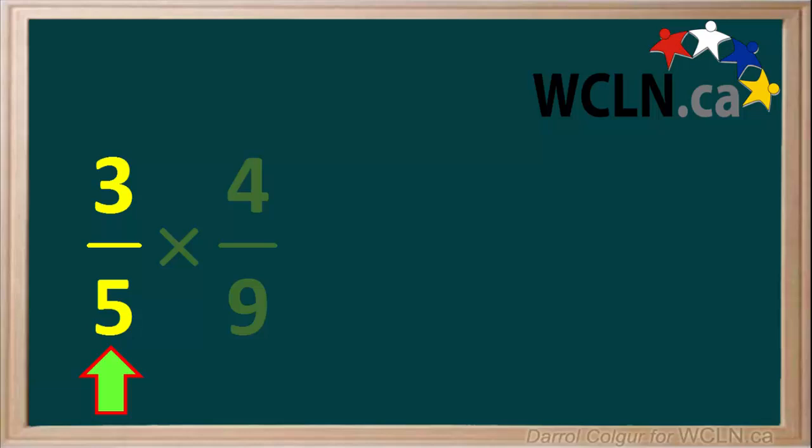3 fifths is already in its simplest form. Also, the fraction 4 ninths is in its simplest form. We cannot divide 4 and 9 by the same number other than 1.